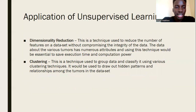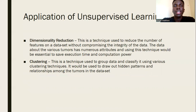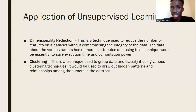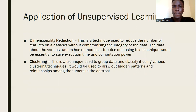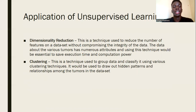For unsupervised learning, we'll use dimensionality reduction — a technique to reduce the number of features in a data set without compromising the integrity of the data. This removes unnecessary attributes and readings. We'll also use clustering to group data and classify it in ways we might not anticipate, allowing the algorithm to find unknown patterns and deduce its own relationships from the data set.